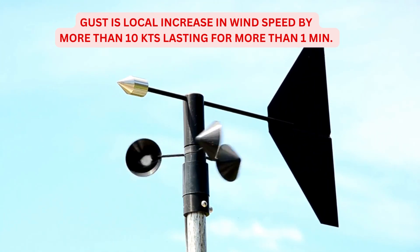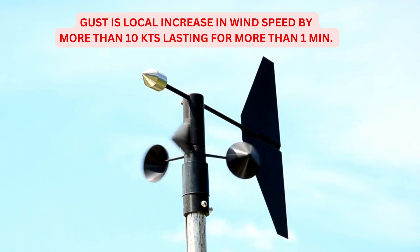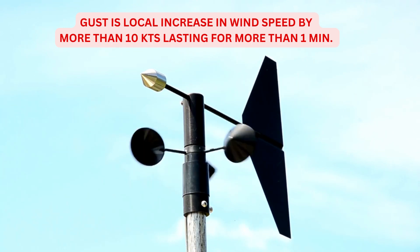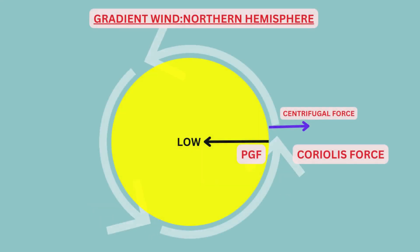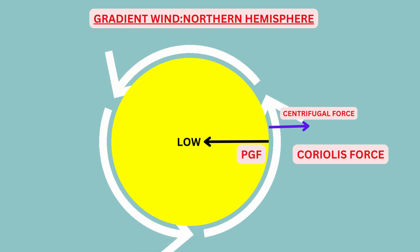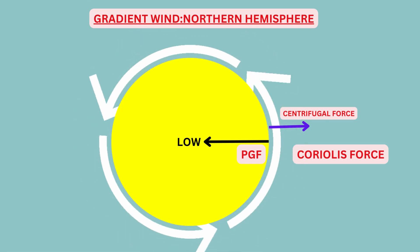Having discussed some facts about surface winds, now let us understand how surface wind is different from other winds like geostrophic wind or gradient wind. Geostrophic wind blows above the friction layer, i.e. above 3000 feet above ground level, straight and parallel to isobars under the influence of pressure gradient force and Coriolis force. Gradient wind blows above friction layer parallel to curved isobars under the influence of pressure gradient force, Coriolis force and centrifugal force.